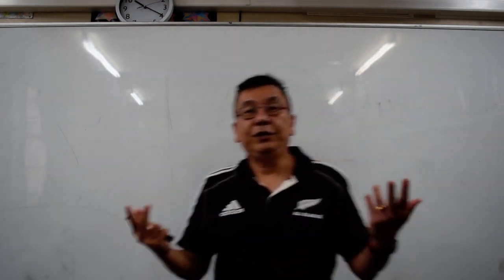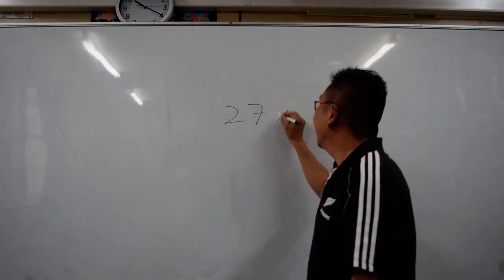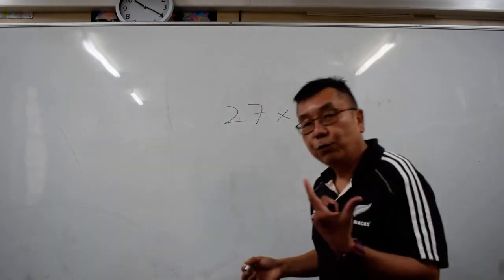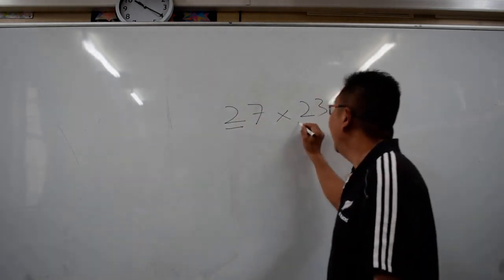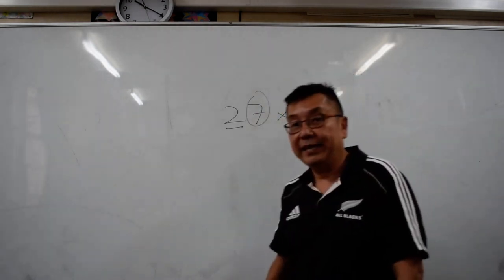This is a double 2 digit multiplication. For example, if I have 27 times 23. How do you do that? This will work if the 2 are the same, the first digit is the same, and the second digit add up to 10.